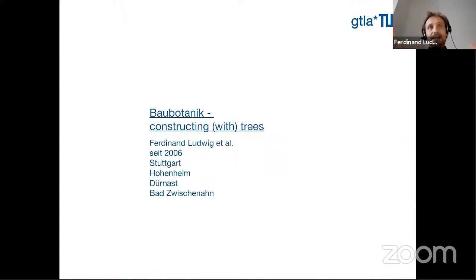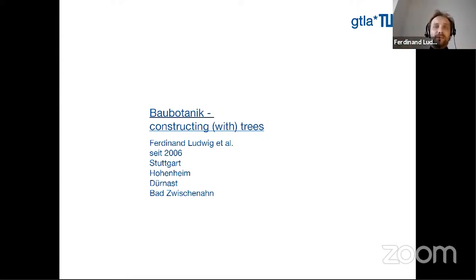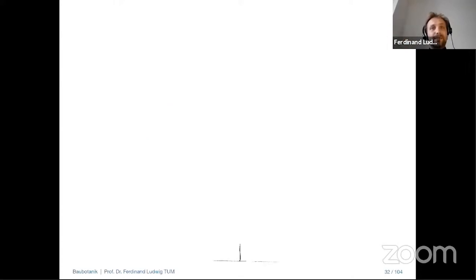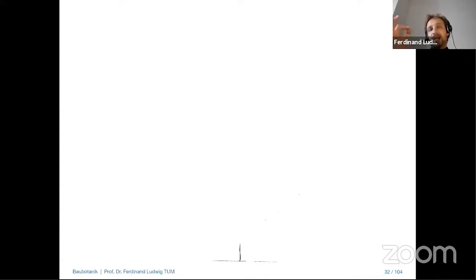I would now like to come to more botanical basics of constructing with trees — and I put 'constructing' in brackets because we are also, in a sense, constructing the tree itself. First, I would like to go through the emergence of a tree. You see a one-year-old sapling here. This exemplifies some key aspects of tree growth and wood production. We have different forms of growth: growth in length, growth in diameter, and growth in branching.